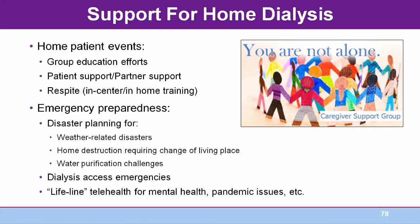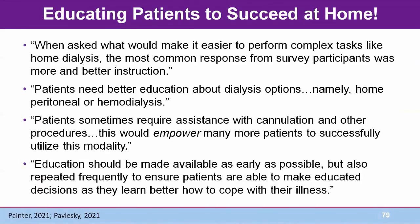Managing home dialysis can be one of the most complex and challenging tasks family caregivers face. People who have kidney failure and receive dialysis at home must take care of the vascular access and manage serious potential complications such as hemorrhage and peritonitis. In a national survey, family caregivers noted their concerns about making mistakes and managing a loved one's pain and discomfort — worries that may be especially acute for caregivers of someone receiving dialysis at home. When asked what would make it easier to perform complex tasks like home dialysis...